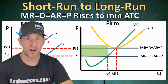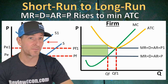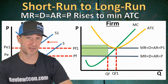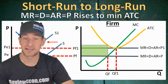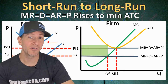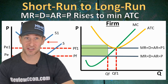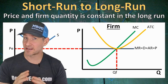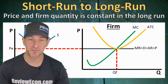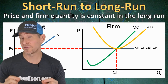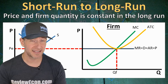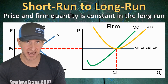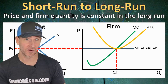Just keep in mind that the profit or loss box does not connect to the new MR-DARP curve — it's either above or below the new MR-DARP depending on whether we started with a loss or a profit. And because we are always moving to long-run equilibrium, the firm's price and quantity of output will always be the same in the long run.